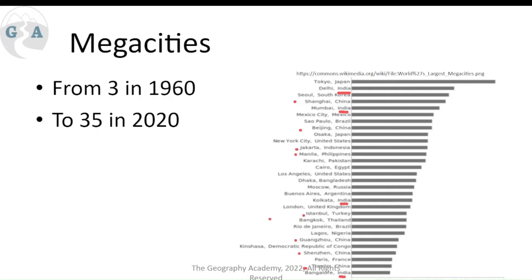A couple of the classics — London, Tokyo, and Paris — were the original three mega cities. Paris is now ranked much lower compared to newer ones. We see growth of newer mega cities like Kinshasa in the Congo. The USA has a couple as well. That's the general trend right now for mega cities.